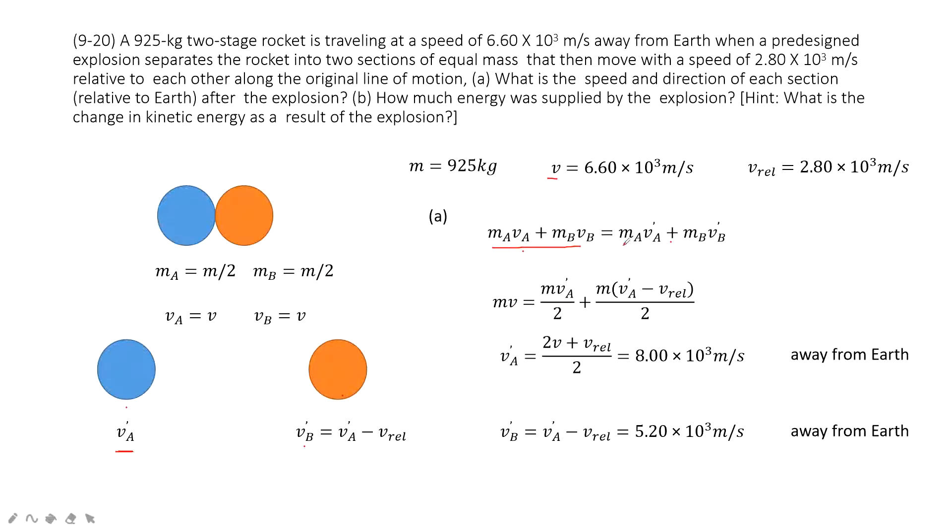And then we input Ma, and then we input M divided by 2. And then input Vb plus is Va plus minus relative velocity. Finally, we can get Va plus in this equation. As we input the known quantities, we get the final answer.